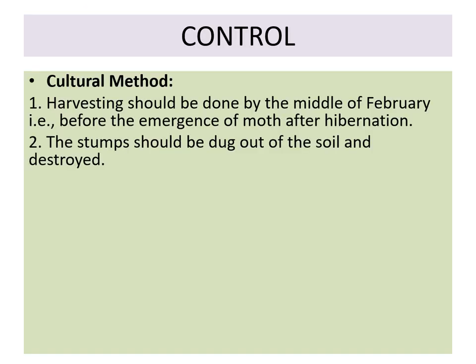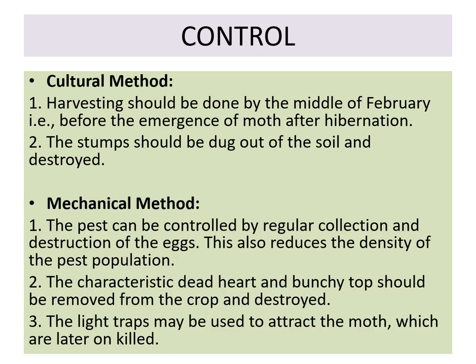For control measures, harvesting should be done by the middle of February before the emergence of moths after hibernation. The stumps should be dug out of the soil and destroyed.